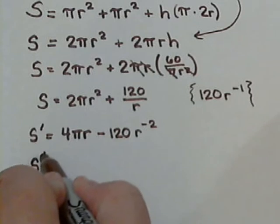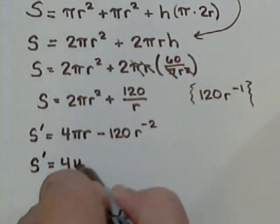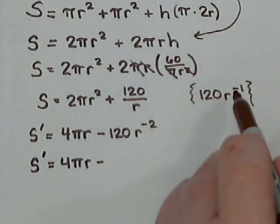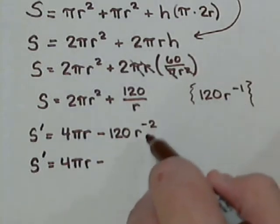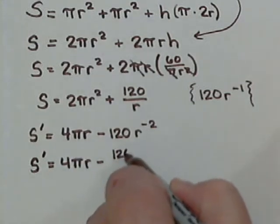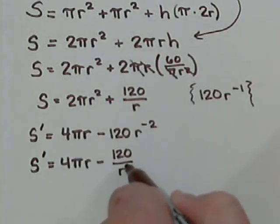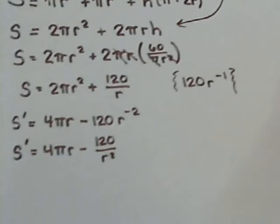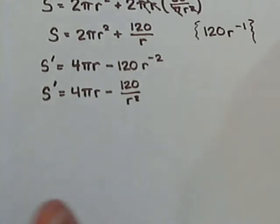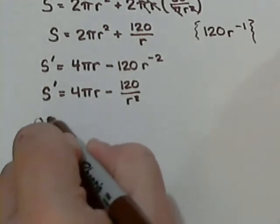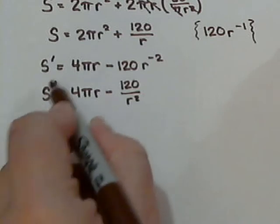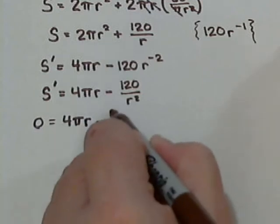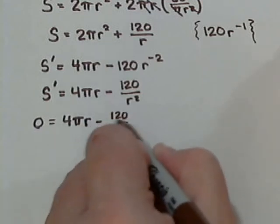And if I simplify this just a hair, we're going to kind of use the same property that we did to pull the r up there to make it negative 1. Since this is negative 2, we're going to move it back down. And it's going to be r squared on the bottom. So there's our derivative. To find the critical points, we're going to make the derivative 0. So 4 pi r minus 120 over r squared.